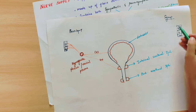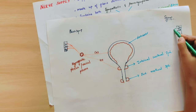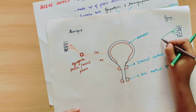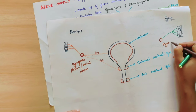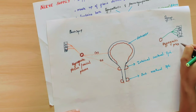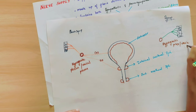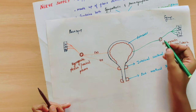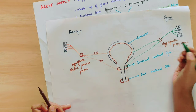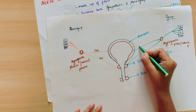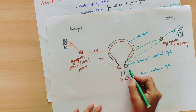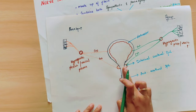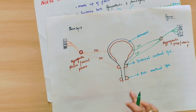For the sympathetic supply, nerve fibers emerge from T11, T12, L1, and L2. They relay in the hypogastric plexus or vesical plexus, then supply the detrusor muscle — with an inhibitory action — and the internal urethral sphincter — with a motor action. So sympathetic is inhibitory for the detrusor muscle and motor for the internal urethral sphincter.